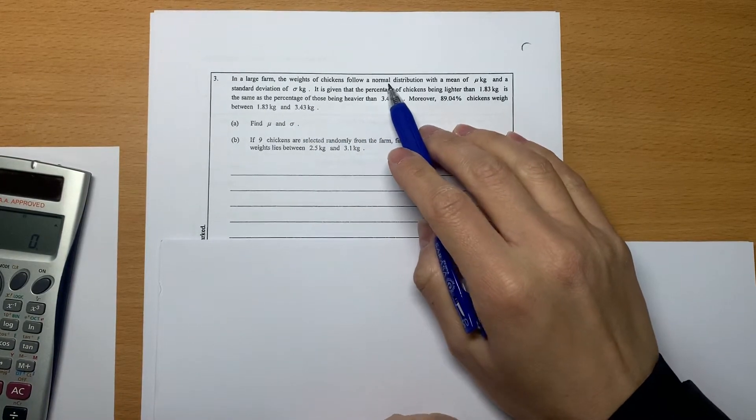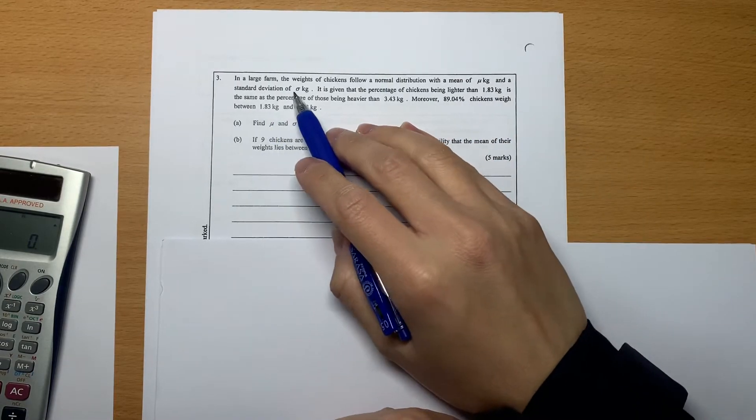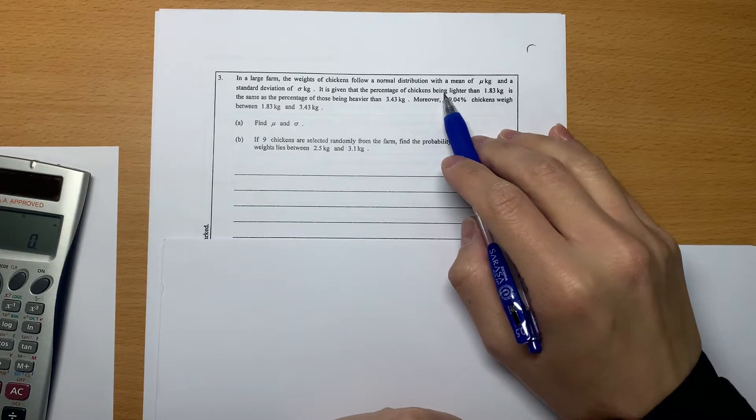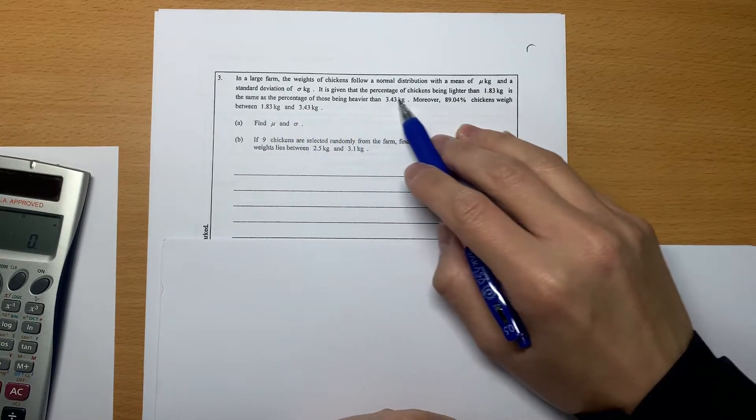About this question, this is a normal distribution with mean μ and standard deviation σ. It's given that the percentage of chickens being lighter than this amount is the same as larger than this amount.